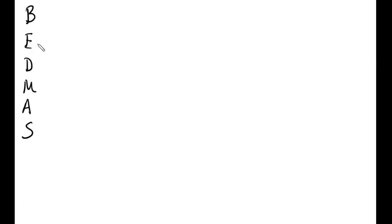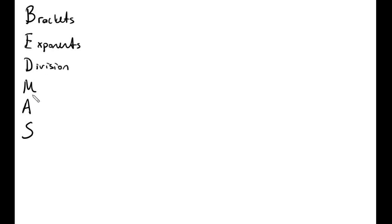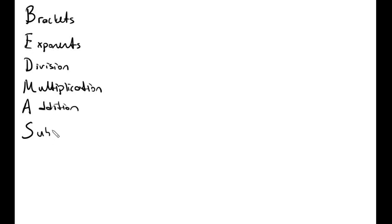So in the BODMAS rule, B is for brackets, E is for exponents, D is for division, M is for multiplication, A is for addition, and S is for subtraction.